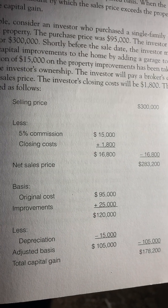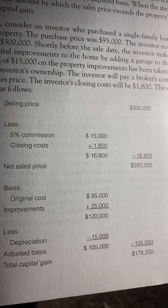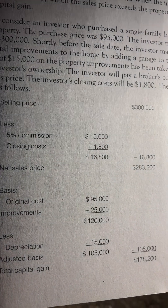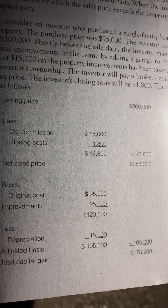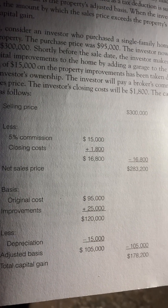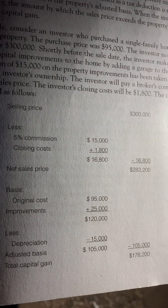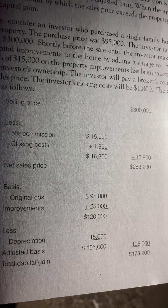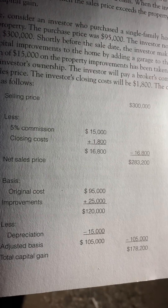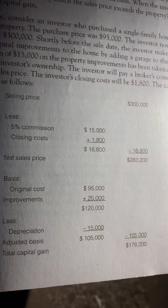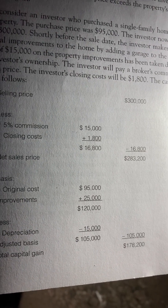Basis: original cost was $95,000, plus improvements of $25,000, equals $120,000. Less depreciation of $15,000, which subtracted from the $120,000 basis equals an adjusted basis of $105,000. Taking that $105,000 adjusted basis and subtracting it from the net sales price of $283,200 equals a total capital gain of $178,200.